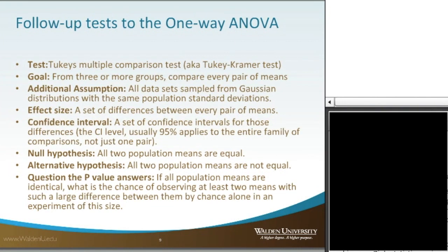The follow-up test for a one-way ANOVA that we're going to look at today is Tukey's multiple comparison test, also known as Tukey-Kramer's test or Tukey's HSD — which stands for Honest Significant Difference. The goal of Tukey's is, when you have three or more groups, to actually compare the means of each group. Tukey's is the post-hoc follow-up test that actually identifies where or which groups are different. An additional assumption is that all data sets are sampled from a Gaussian distribution with the same population standard deviations, same as the ANOVA.